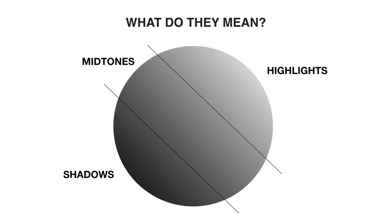Before going on to the next example, it's important to understand the difference between shadows, midtones, and highlights. Shadows include the areas where the light is the least intense. Want to bring up the brightness or saturation in a very dark area of the frame? Focus on the shadows first. Want to adjust the sky or the grass on a bright sunny day? You'll want to focus on the highlights first. The midtones is pretty much everything in between the shadows and the highlights.